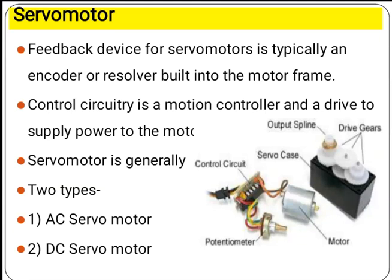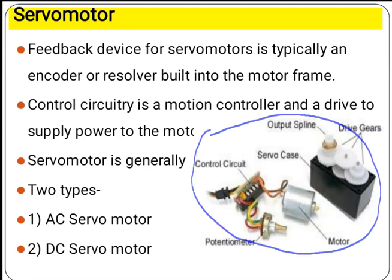The feedback device of servomotor is typically an encoder or a resolver built into the motor frame. The control circuitry is a motion controller and a drive to supply power to the motor. In this diagram you can observe the overall functioning parts of servomechanism: the servomotor, gears, control circuitry, and potentiometer. The combination of these whole parts is known as servomechanism.